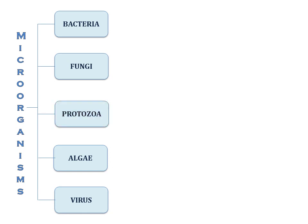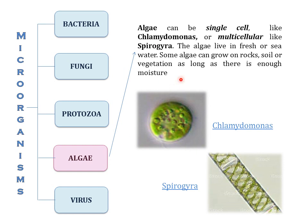The fourth group of microorganisms is algae. Algae can be single-celled like Chlamydomonas, or multicellular like Spirogyra. Algae live in fresh water or sea water. Some algae can grow on rocks, soil, or vegetation as long as there is enough moisture — algae requires moisture for its existence.